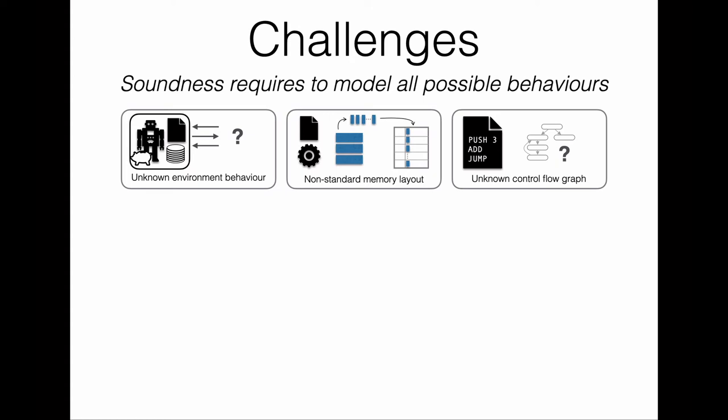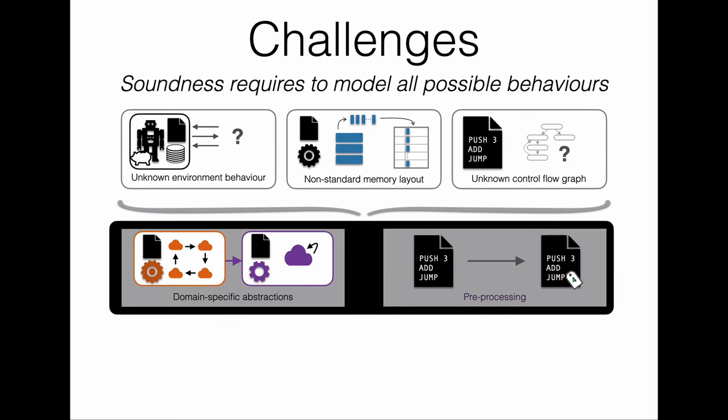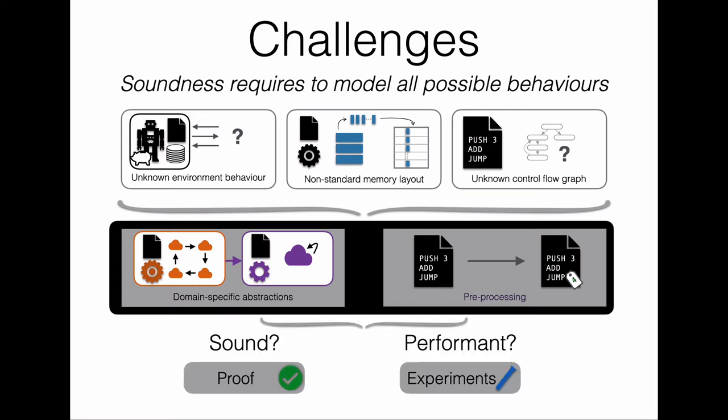The way to cope with this complexity is to develop advanced domain-specific abstractions and to perform pre-processing to recover as much static information on individual contract instances as possible — for example, to recover jump destinations. When doing that, one always needs to evaluate whether the chosen abstractions and pre-processing steps are still sound and yield a performant analysis tool. This requires proofs and practical experiments, and finding the right abstractions is a very cumbersome and error-prone process, since it technically requires reimplementing the analyzer at each iteration step.